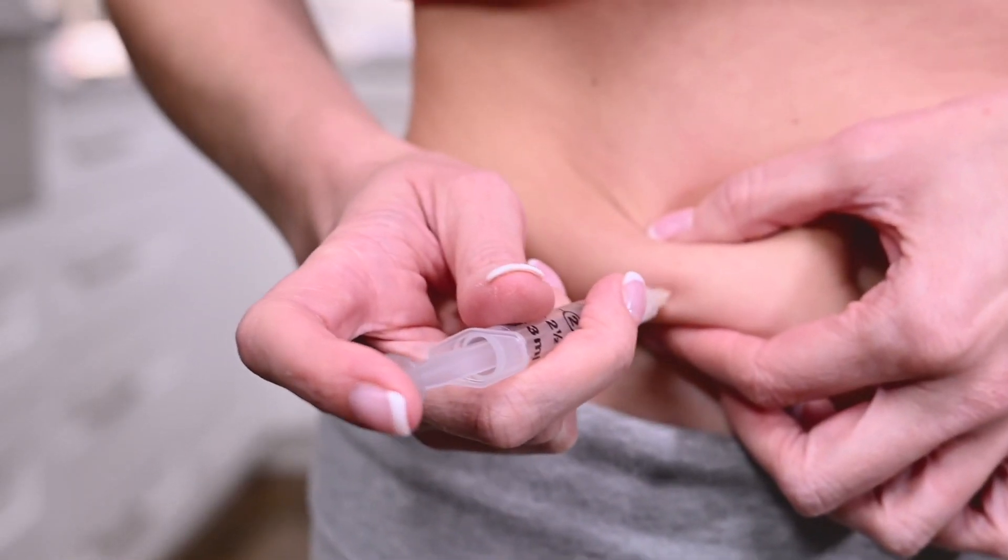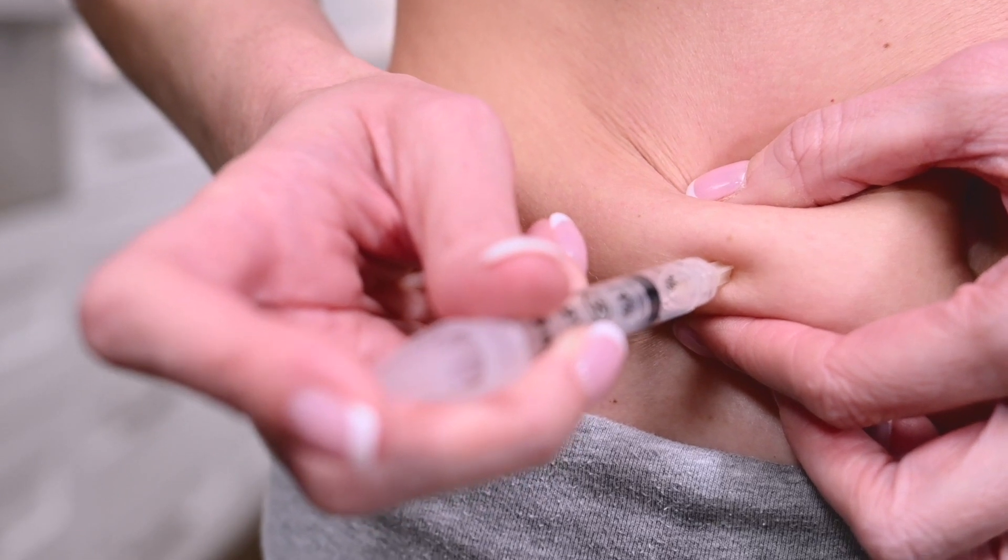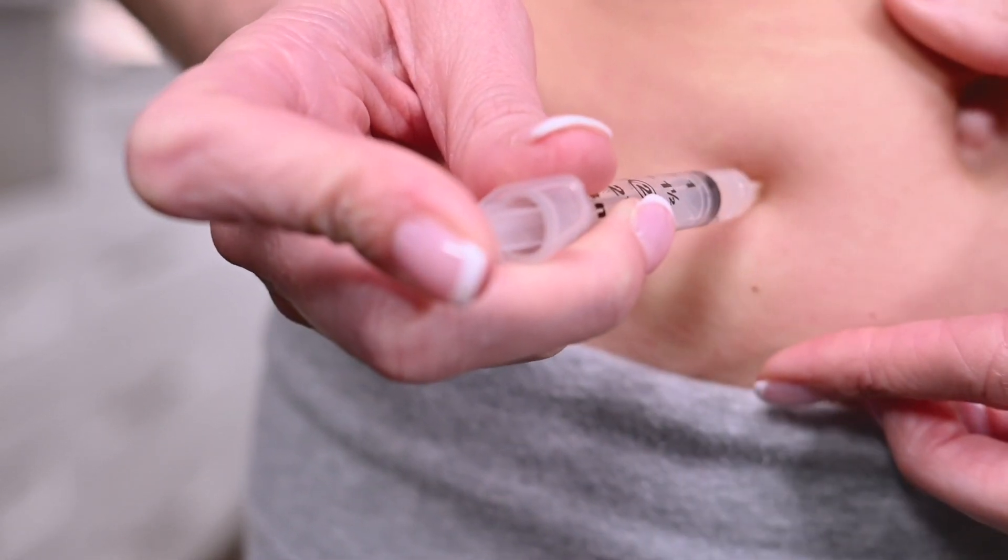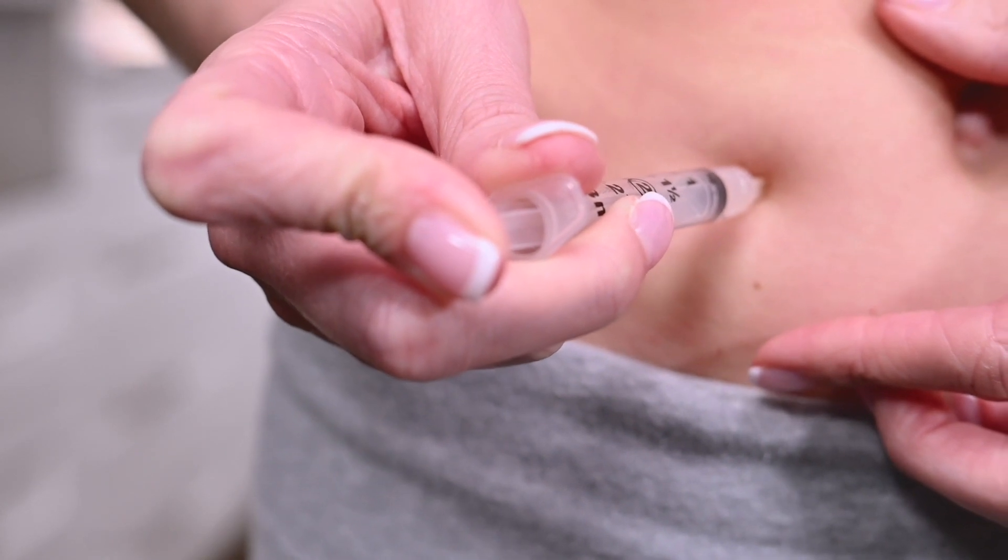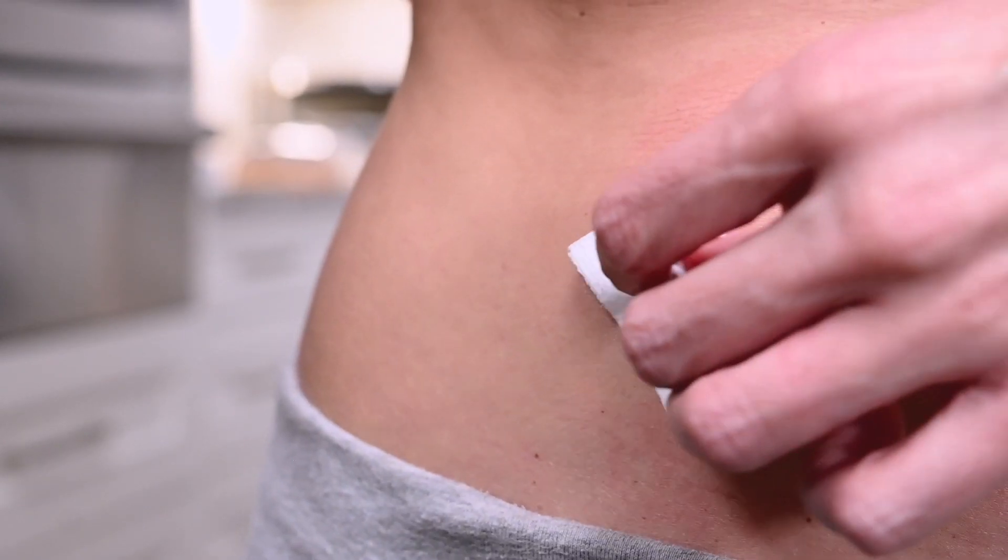Take the syringe in your preferred hand. Pinch a fold of skin between your fingers and insert the needle at a slight angle. Release the skin after the full length of the needle is inserted. Push the plunger until all the medication is administered into the injection site. Gently remove the syringe and apply pressure with gauze.